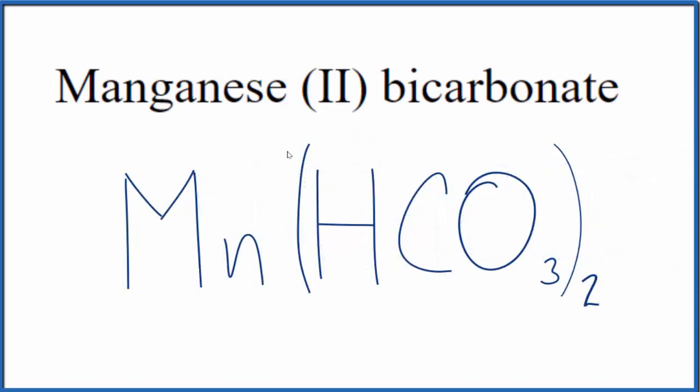And this is the formula for manganese 2 bicarbonate, Mn(HCO3)2. This subscript 2 outside the parentheses means we have two of these bicarbonate ions.